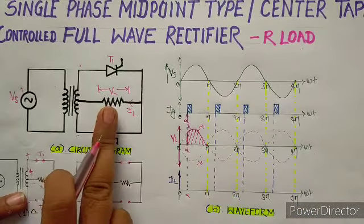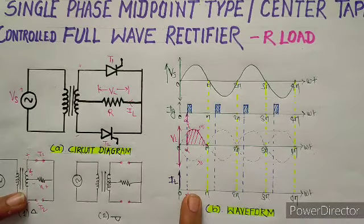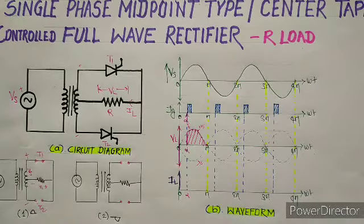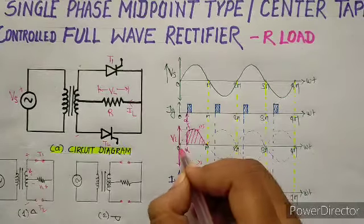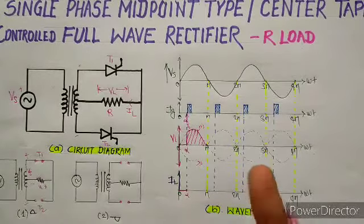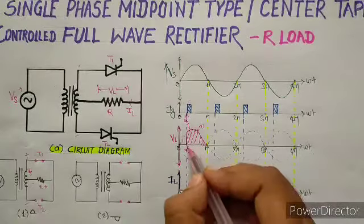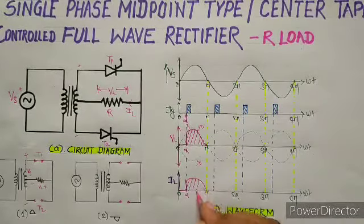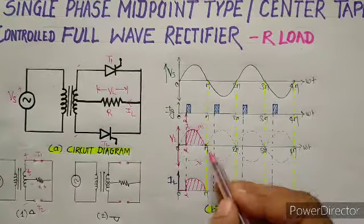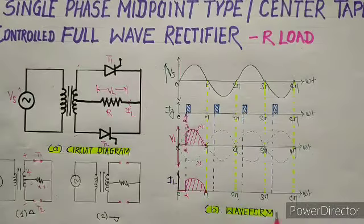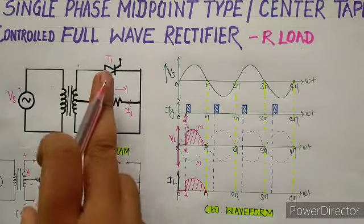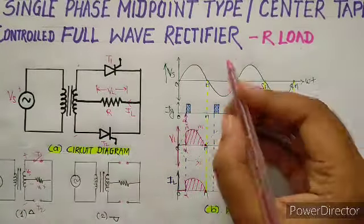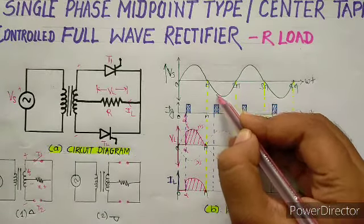At ωt = π, the current through SCR T1 becomes zero. जैसे ही current 0 हुआ, T1 naturally commutate होकर turn off हो जाएगा। Pi के बाद negative half cycle शुरू होती है। During negative half cycle, the lower terminal becomes positive and the upper terminal becomes negative. So T2 SCR के anode को positive मिलेगा और T1 के anode को negative — T2 is forward biased for the negative half cycle. But T2 will not turn on until we give it a gate pulse.